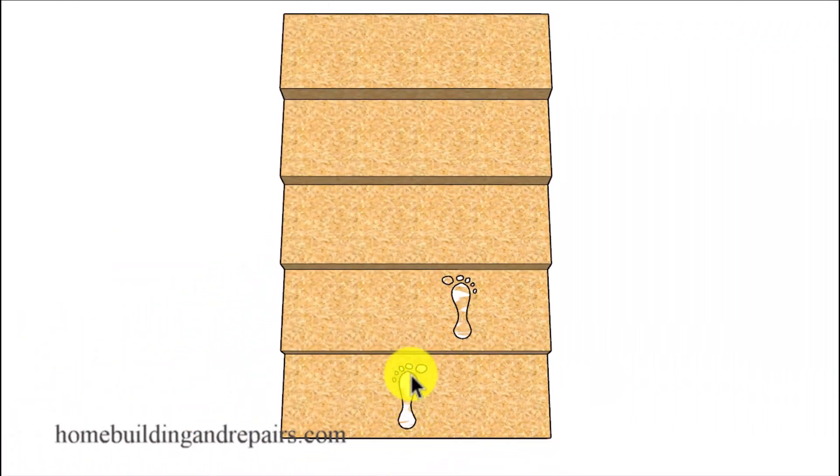For example this stairway might have a better riser height for a shorter person but the length of the tread will be a little too long whereas a larger person might like the length of the step but won't like the height of the riser.